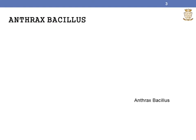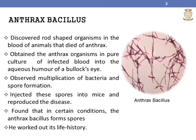Let's discuss each discovery of Koch in detail. First is the Anthrax bacillus. He discovered rod-shaped organisms in the blood of animals that died of anthrax. He experimentally obtained the anthrax organism in pure culture on a depression slide by inoculation of infected blood into the aqueous humor of a bullock's eye. He observed the multiplication of bacteria and spore formation. He infected these spores into mice and reproduced the disease. He found that the anthrax bacillus forms spores which can survive on earth for years, and he passed the anthrax bacillus from one mouse to another through twenty generations, working out the life history of the anthrax bacillus.